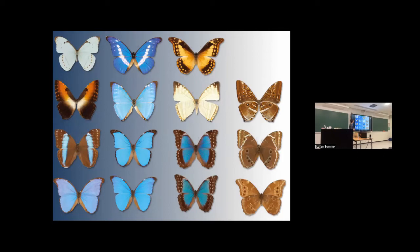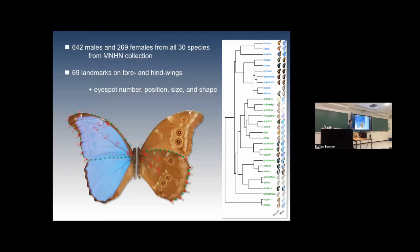Not all morpho butterflies are blue iridescent, but many species are. Their ventral side is much more brownish, with patterning and eyespots. They're not very diverse — only about 30 species — but really well known in terms of taxonomy and systematics. When I was doing my PhD at the Museum of Paris, we had one of the best collections for morpho butterflies, curated by Patrick Blondin, probably one of the best morpho specialists. We used this fantastic source of information to generate a dataset of wing shape for the entire group, photographing males and females, both dorsal and ventral sides, giving us both forewing and hindwing shape information.